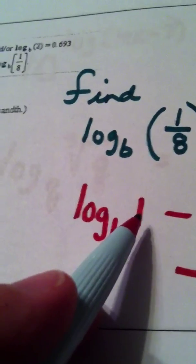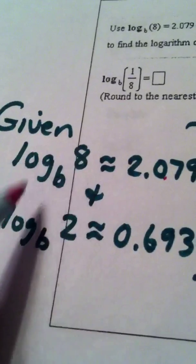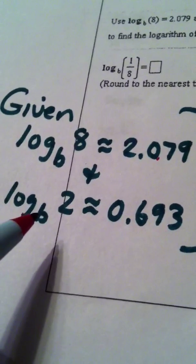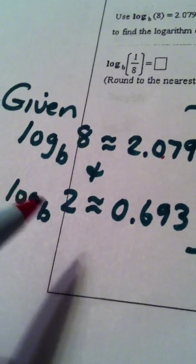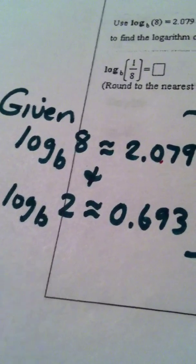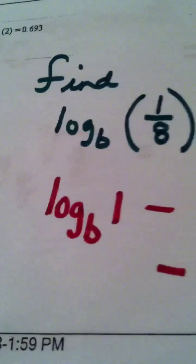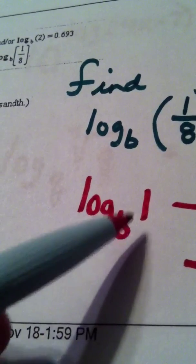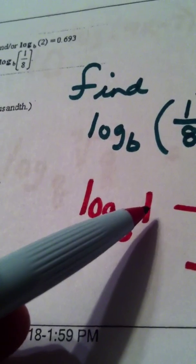The log base b of 1, well when I look back over here I don't see that information given. So this is a little tricky. The first time you see it. The second time you see it hopefully you'll get the trick. You don't need any information for the log base b of 1. Here's why you don't. Let me take you over here.